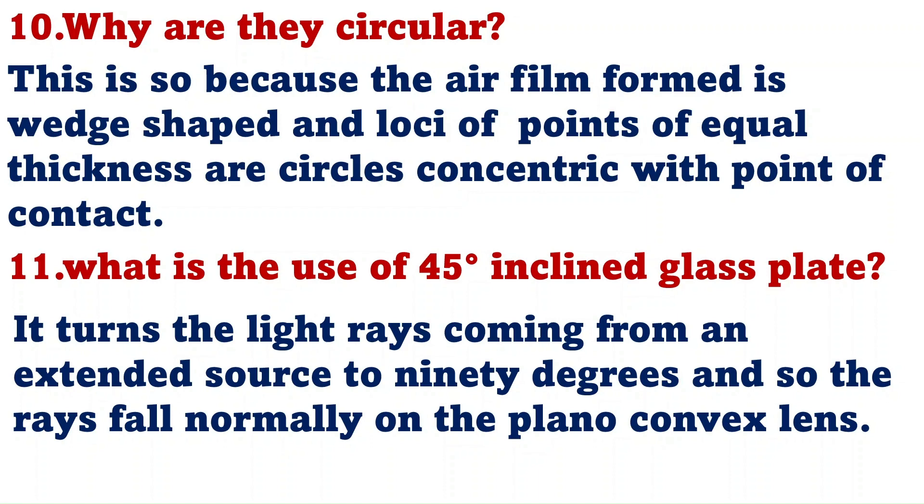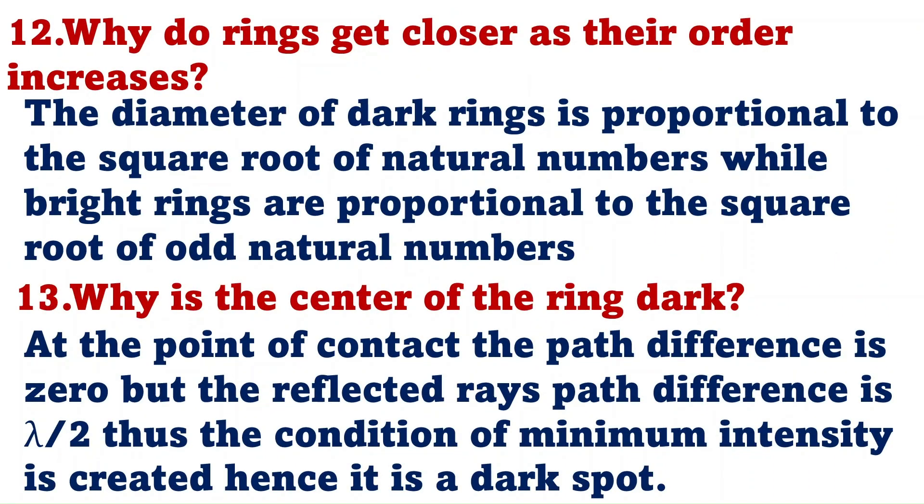What is the use of 45 degrees angle inclined glass plate? This inclined glass plate turns the light rays coming from extended source to 90 degrees, and so the ray falls normally on the plano-convex lens. Why do rings get closer as their order increases? The diameter of dark rings is proportional to the square root of natural numbers, while bright rings are proportional to the square root of odd natural numbers.